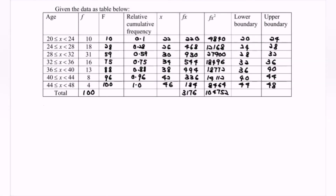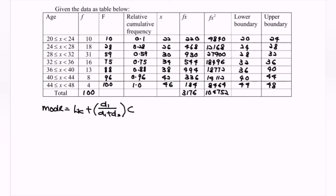Next, we have the mode. So the formula for mode is equal to LK plus bracket, where we have D1 over (D1 plus D2), multiplied with the class size. Kindly refer to the table and refer to the frequency where we need to find the highest frequency. So where we have 31, and the modal class will be 28 until 32, where 32 is not included.